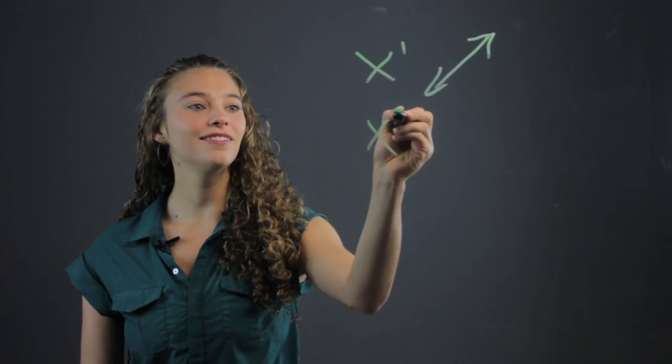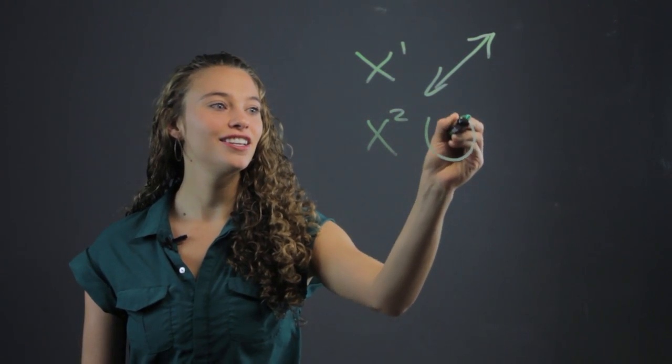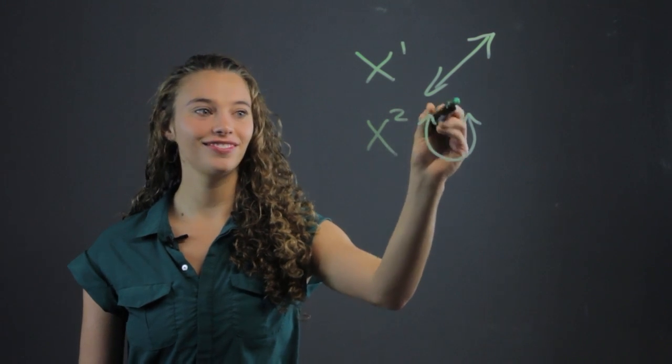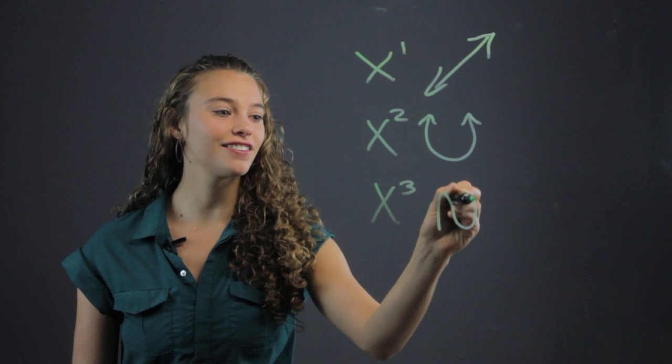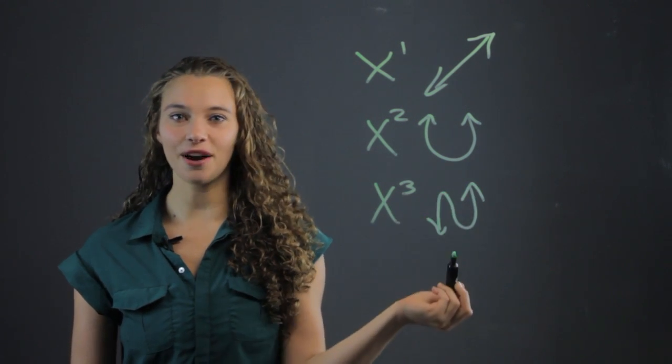If it's x to the second, the graph's going to be going in two directions. If it's x to the third, the graph will be going in three directions, and so on.